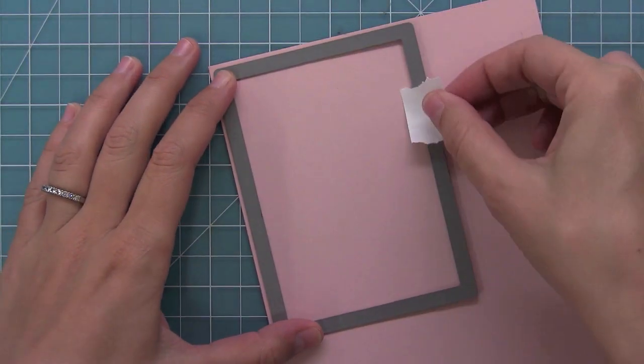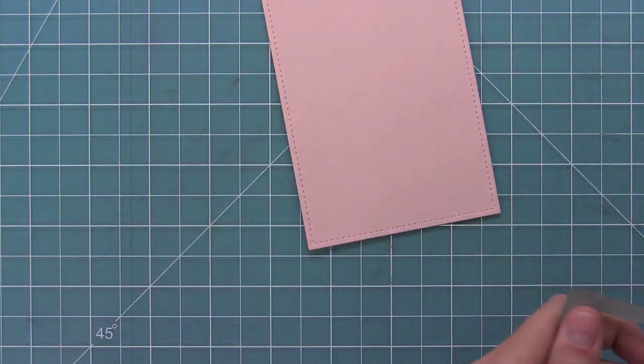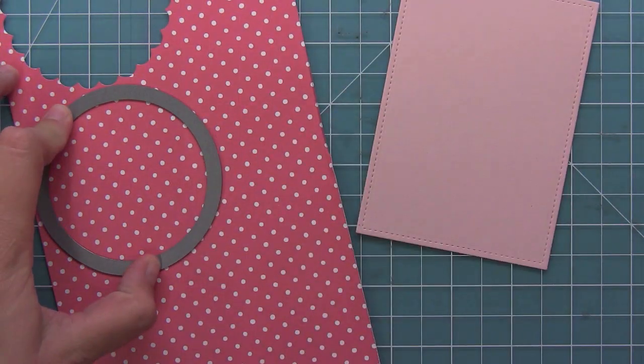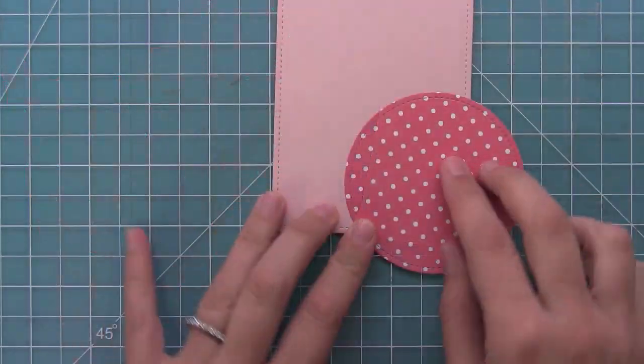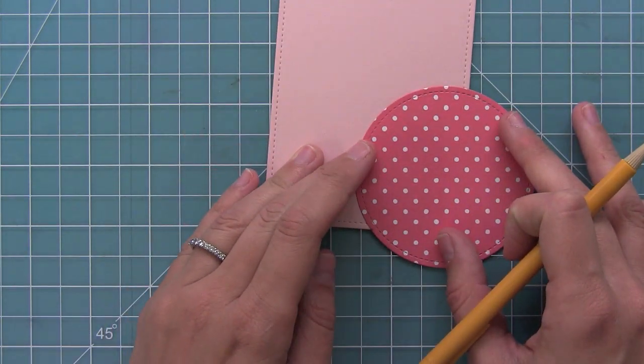So now it's time to get creating. So I'm using one of the stitched rectangle dies here and I've cut a little piece of light pink cardstock, and here I'm using some of the wild rose color of Let's Polka with one of the new stitched circles which I love so much.